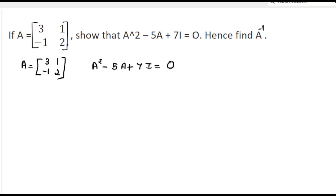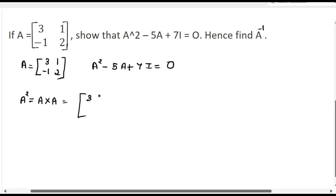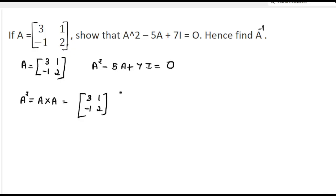First, we will find A squared. A squared is nothing but A into A, which equals matrix [3, 1, -1, 2] multiplied by again A, [3, 1, -1, 2].